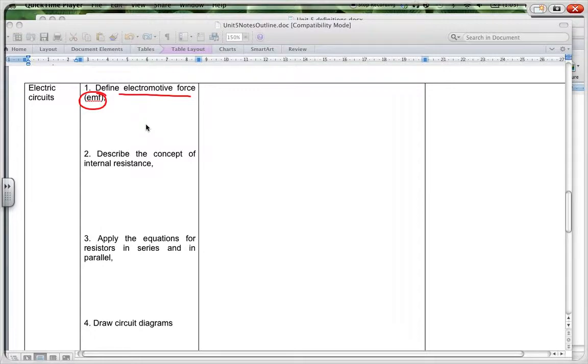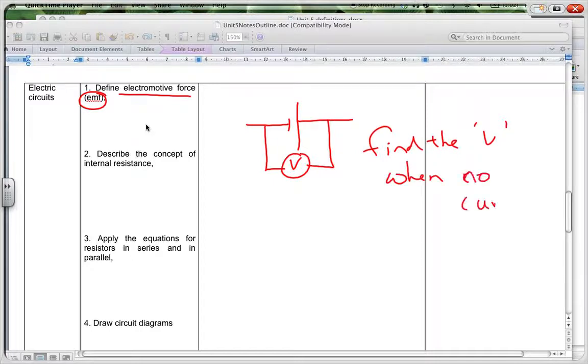Now, basically with that, the way you measure your EMF for any cell is you find the potential difference. You use the voltmeter and you find the potential difference when there's no current flowing. So when you find the V when you have no current, you basically find the EMF.